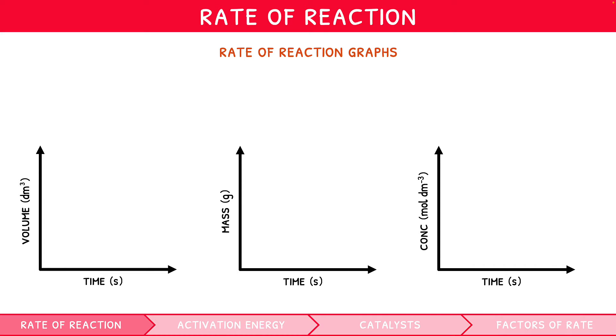Commonly in the exam you can be asked to calculate the rate of reaction from one of these graphs at a point in time. This is done by calculating the gradient of the line at that point in time. For straight line graphs, simply use change in y divided by change in x. This is commonly remembered using the phrase rise over run.